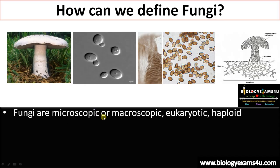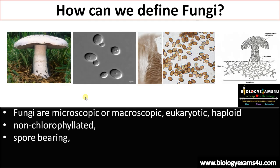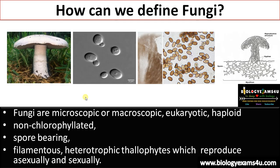Fungus can be microscopic or macroscopic. It is eukaryotic, haploid, non-chlorophyllated — not green — and spore-bearing. It is filamentous and heterotrophic as it is non-chlorophyllated. Thallophytes don't have proper differentiation but can reproduce sexually and asexually. The internal structure consists of hyphae — individual filaments called hyphae — and aggregation or grouping of hyphae forms mycelium.